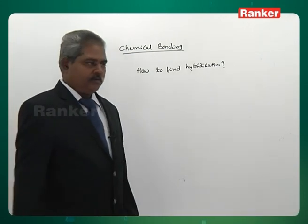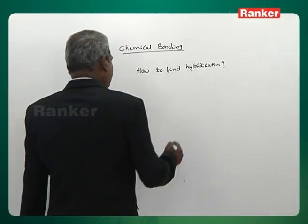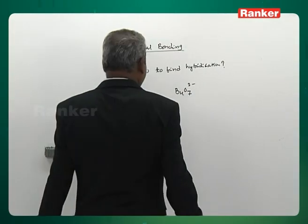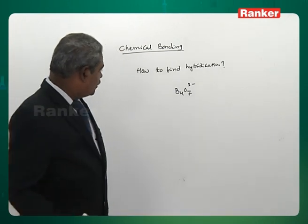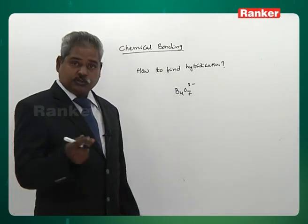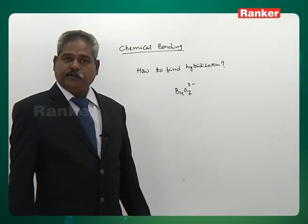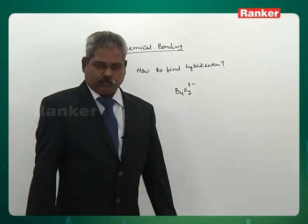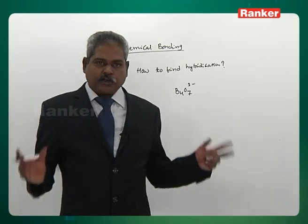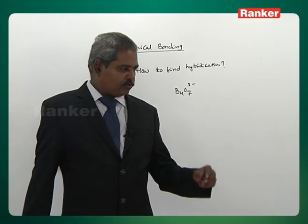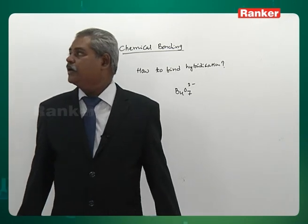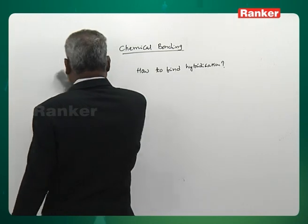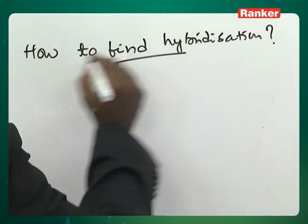There may be one or two cases you cannot apply these rules — complex structures like B4O7²⁻ (borax) may need to be learned separately. Most things you learn in a general way, and if there are one or two exceptions, you learn them separately. That should not be a big problem.